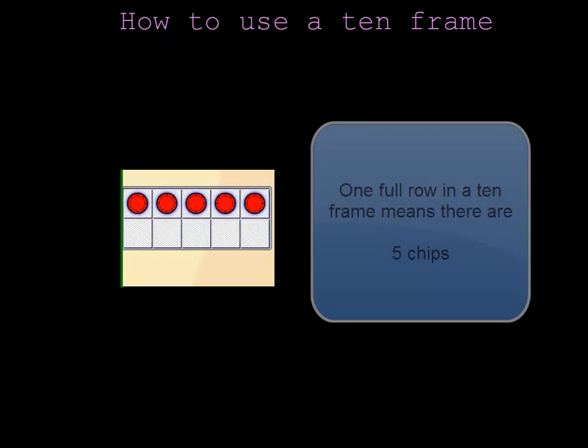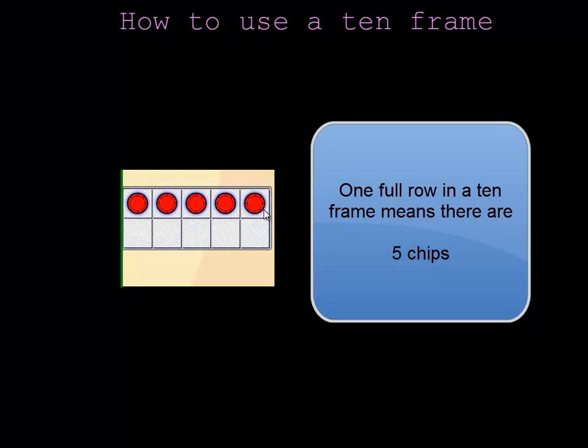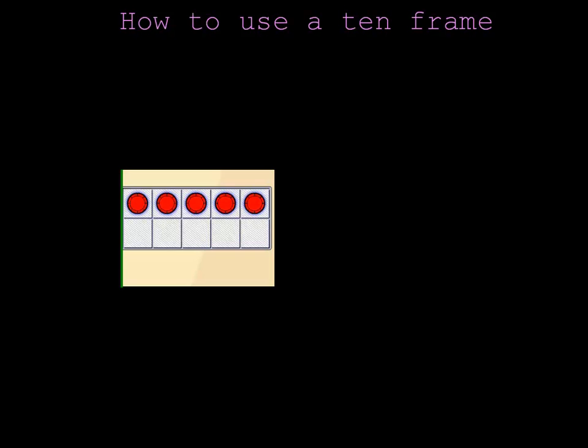This 10 frame is half full. The top row is full and I know that when one whole row of the 10 frame is full, that's 5 chips and I don't have to count it.